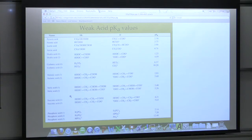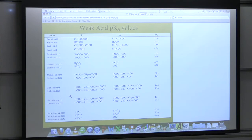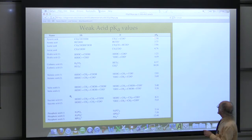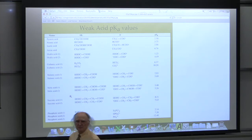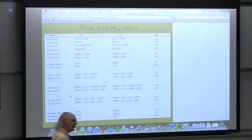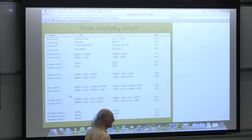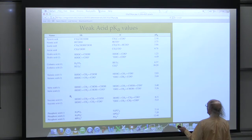Pyruvic acid with the proton on looks like this; with the proton off, it looks like that. The only difference between those two is that one proton — there's only one proton on that molecule that can come off, the one on the carboxyl group. This molecule has a pKa of 2.5, making it a relatively strong weak acid — almost the strongest on the table. There's one at 1.23; it's definitely stronger than formic acid at 3.75.